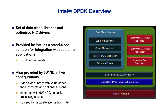6Wind provides enhancements to the standard Intel DPDK libraries, including virtualization features, crypto support, and drivers for third-party NICs. This enhanced version is available either standalone with full technical support or fully integrated within the 6Wind Gate networking software.